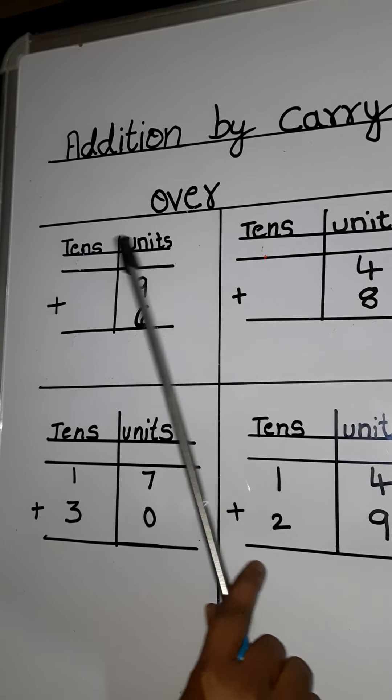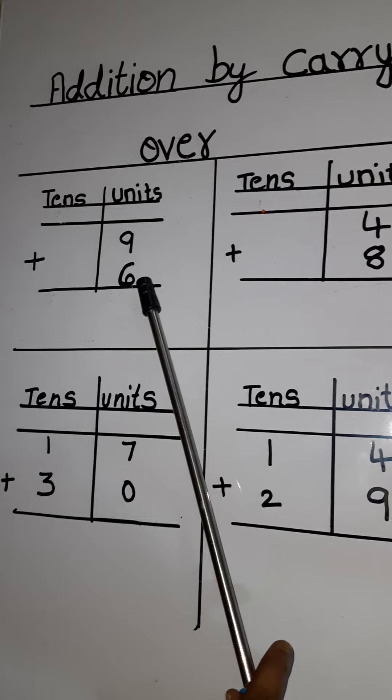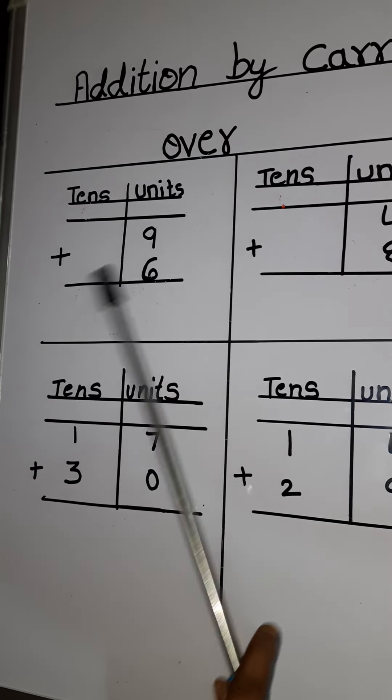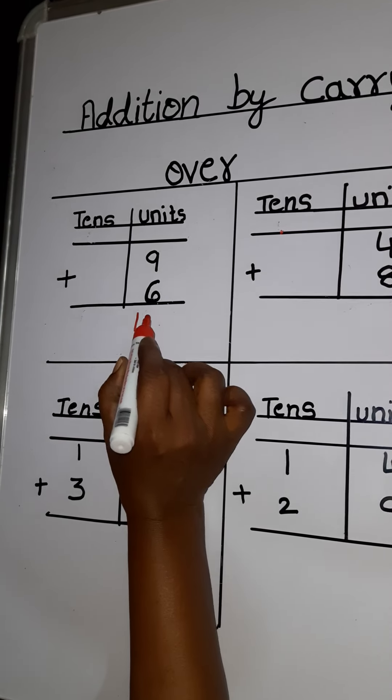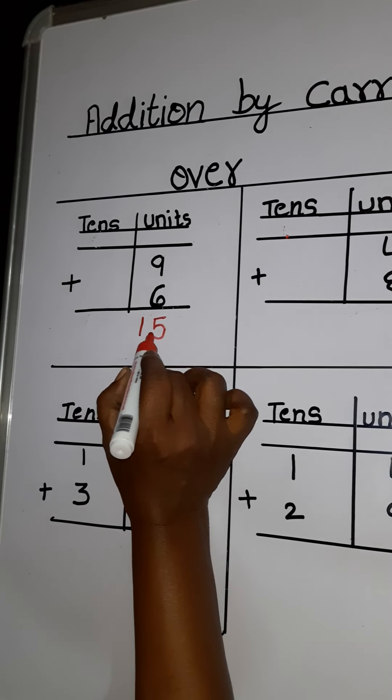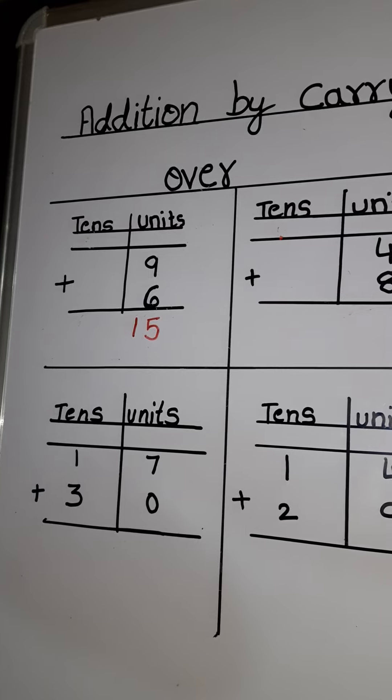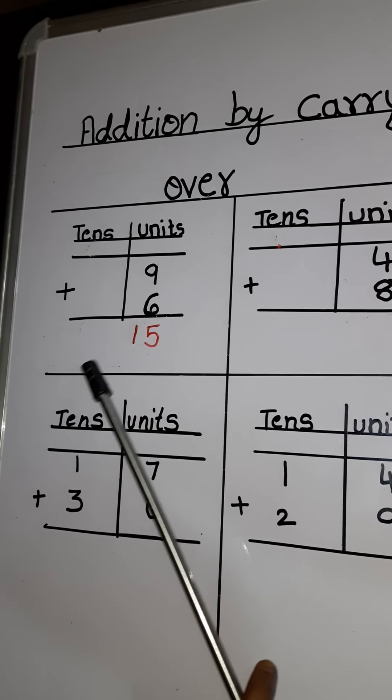What number can you see under unit's place? 9 and 6. 9 plus 6 equals 15. You cannot write 15 under unit's place.